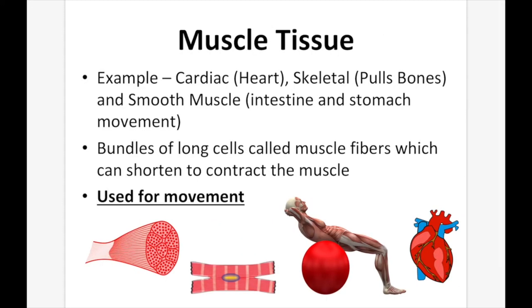Muscle tissue — for example, cardiac, which is muscle tissue in your heart; skeletal, which is what pulls bones around; and smooth muscle, which is responsible for intestine and stomach movement. Skeletal muscle is going to be voluntary — things you can control. Smooth muscle and cardiac are going to be involuntary, meaning you can't control them; they just happen on their own. Muscle tissue is made up of bundles of long cells called muscle fibers, which can shorten to contract the muscle.